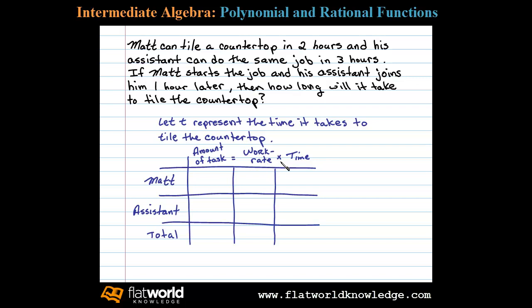In this case it says Matt can tile a countertop in two hours, in other words he can do the one job in two hours or one half of the job per hour. Now his assistant can do the same job in three hours, so he can do one-third of the job per hour.